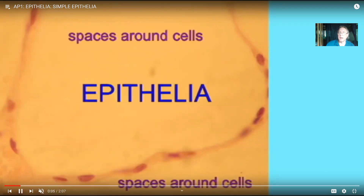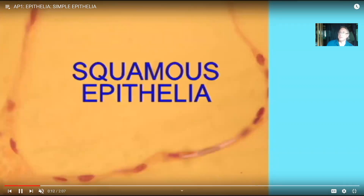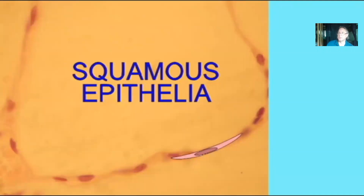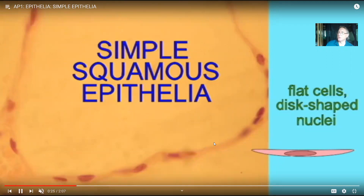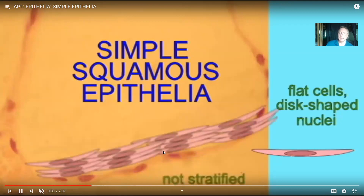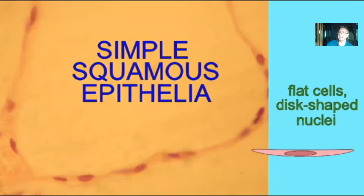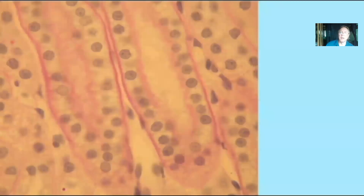This epithelia lines an alveolus or air sac of the lung — you can tell because of the space. To name it, notice the cells are rather flat, with a disc-shaped nucleus rather than round, and there is only one layer of cells. The word for flat cells is squamous, so this is a squamous epithelia. Because it has only one layer, it's called simple squamous epithelia. Lining the air sacs of the lungs is a great example of this type.